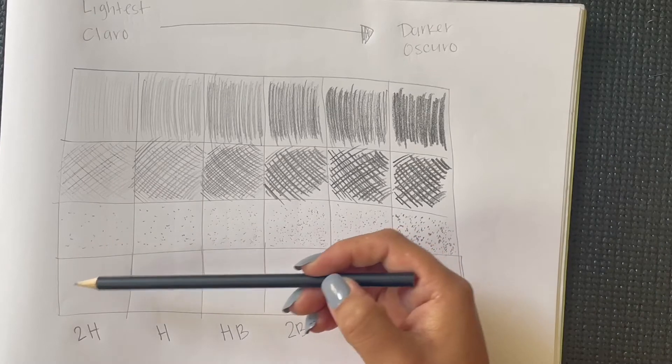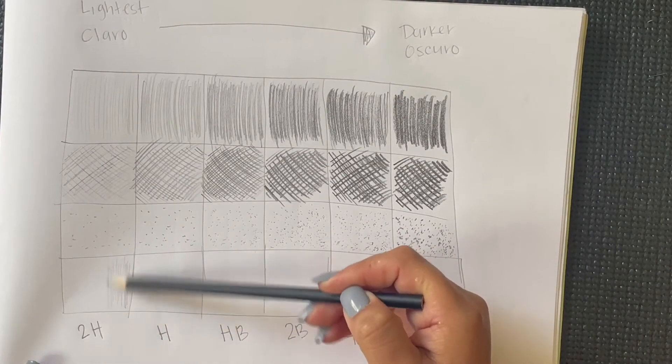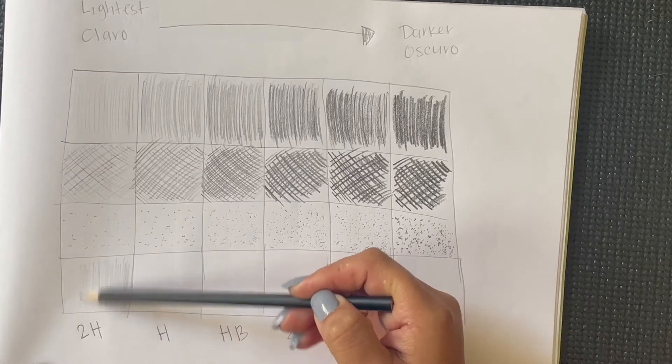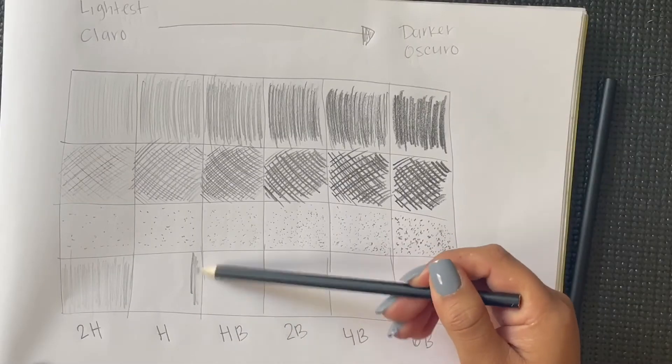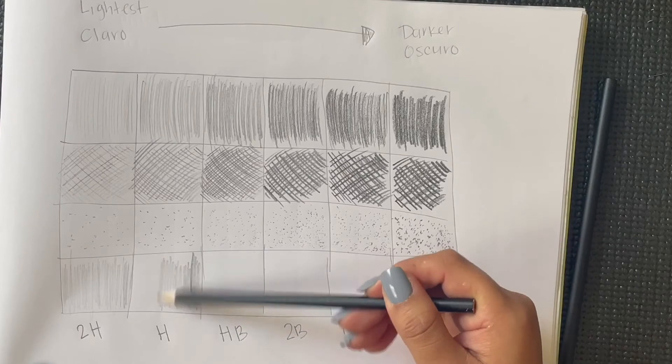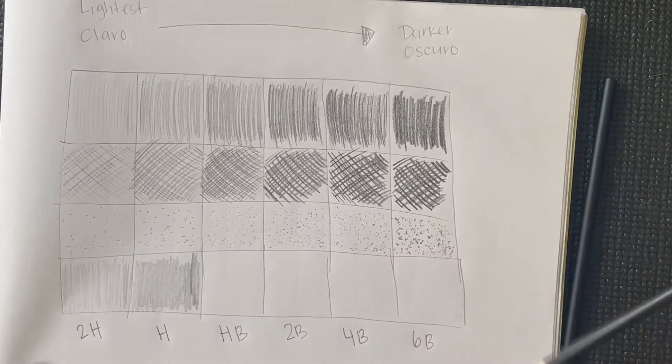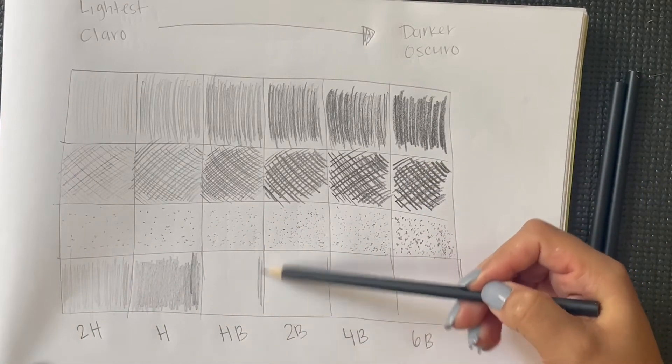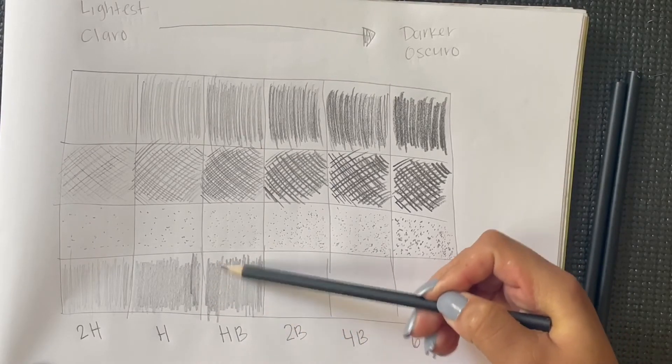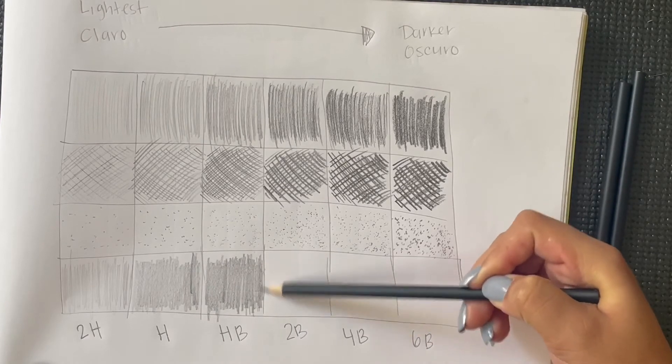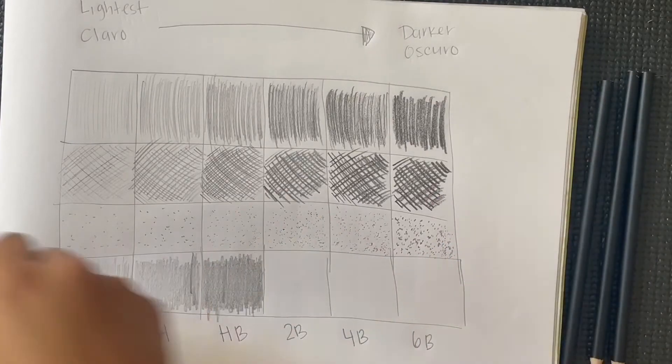We will now start with the blending technique. Ahora estaremos empezando con la técnica de mezcla. Tilt your pencil to the side and gradually move your pencil up and down. Obtener tu lápiz de un lado y hacer marcas hacia arriba y hacia abajo. No se te olvide cambiar tu lápiz.